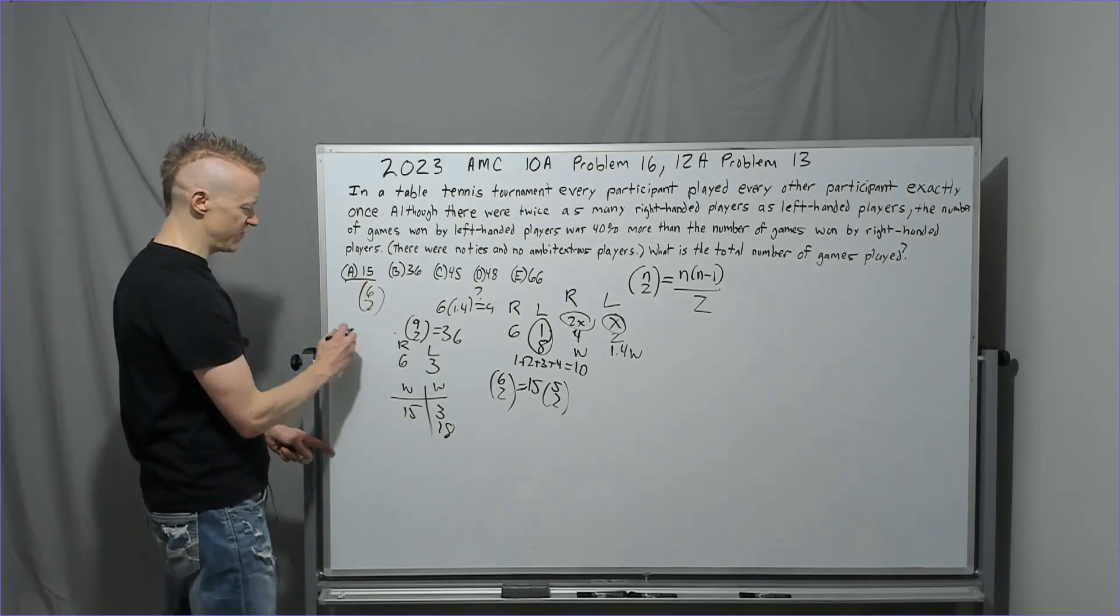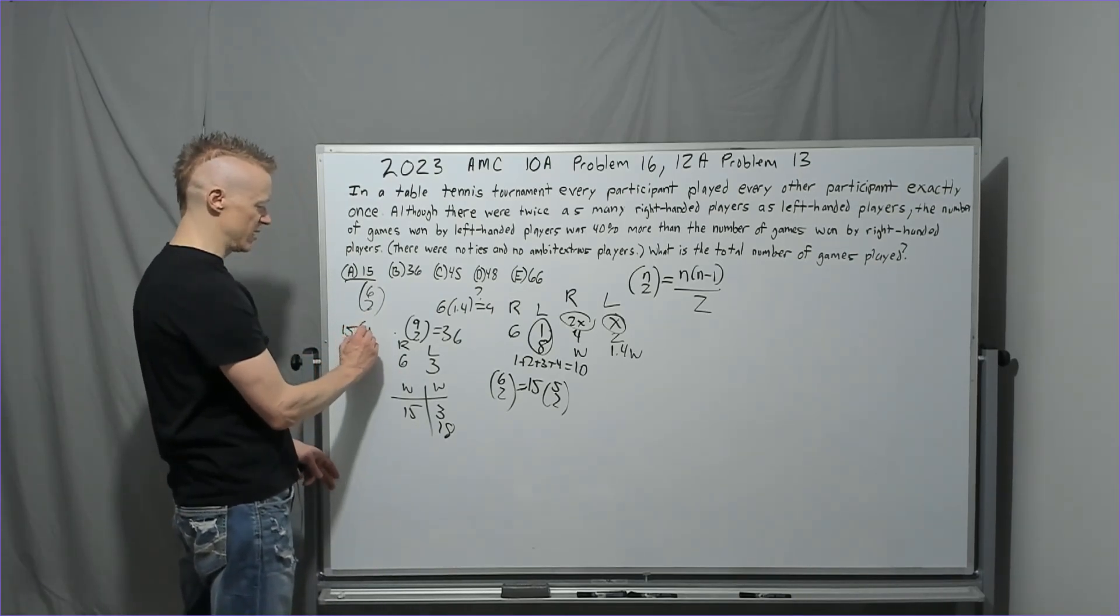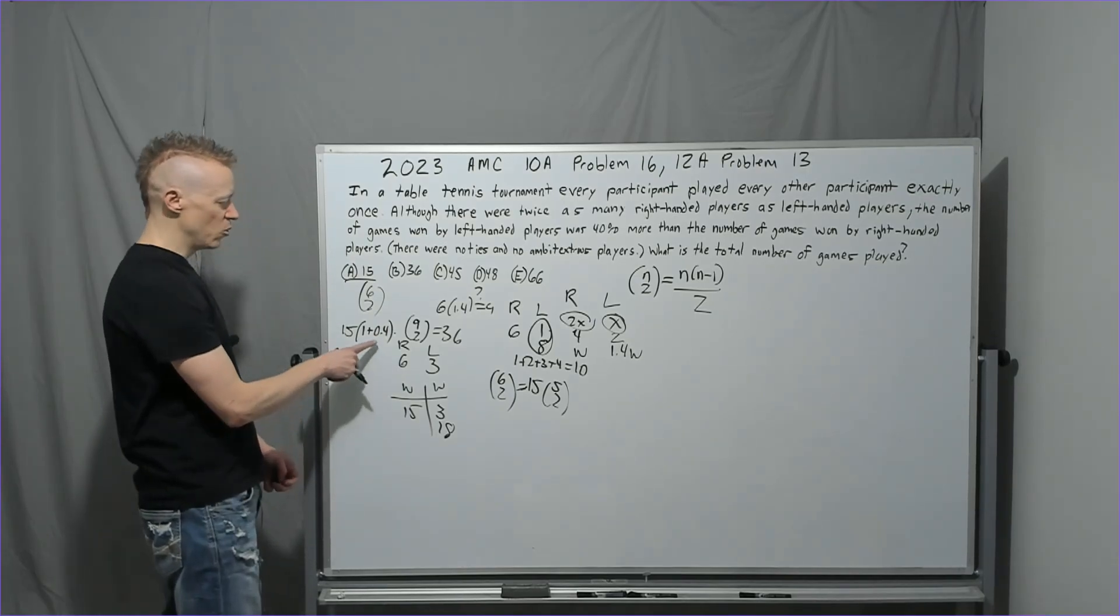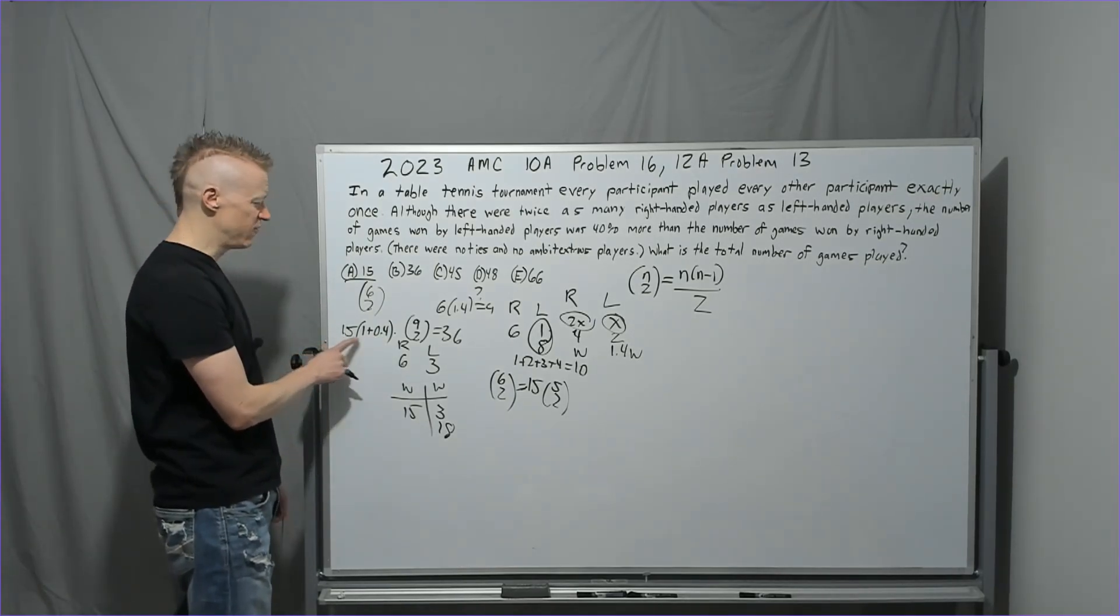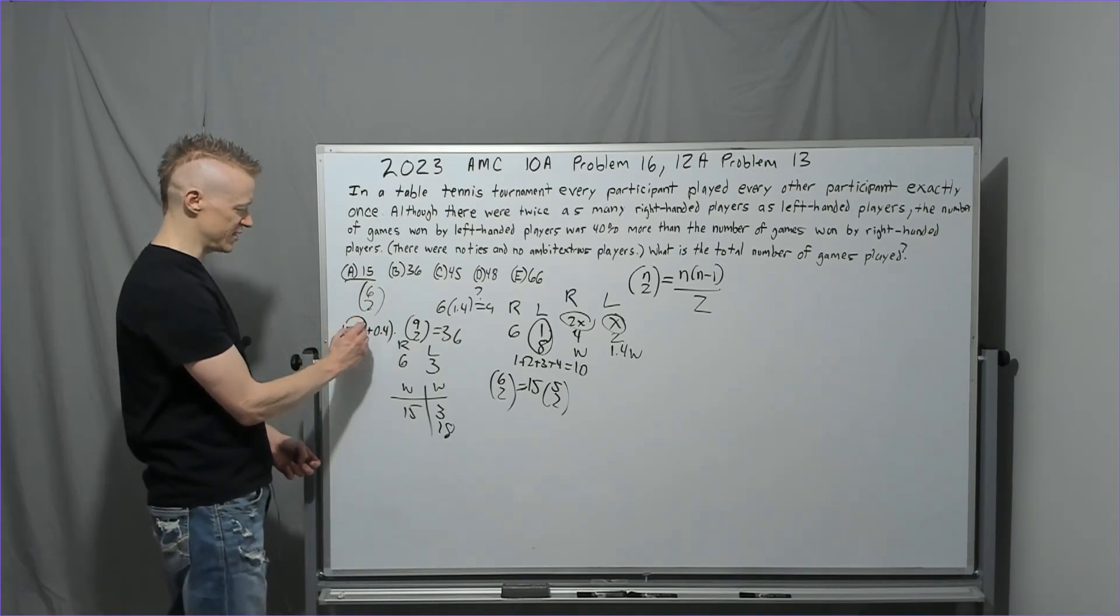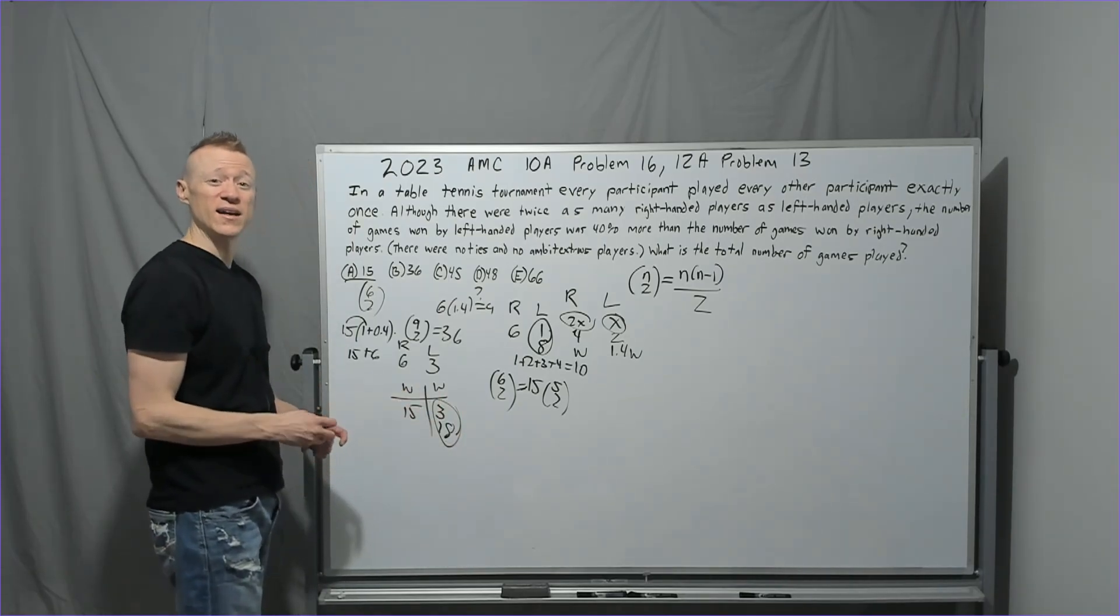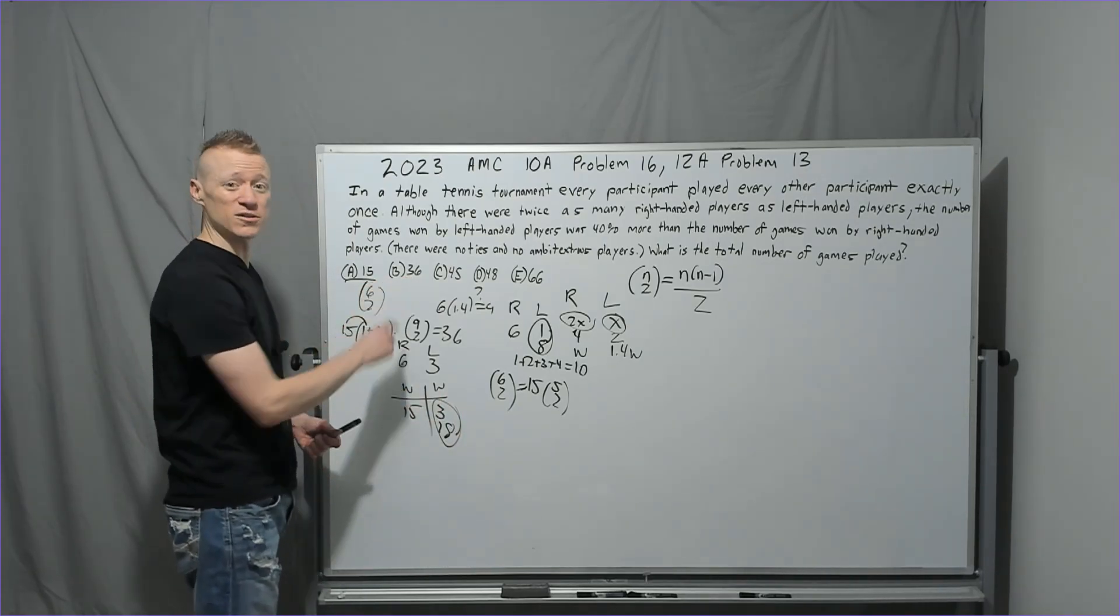And so you say, okay, so now if I take 15, what is 40% of 15? What if I did 1 plus 0.4? Well, 10% of 15 is 1.5, and 40% is just 4 times that. So it's 6. And if you take 15 times 1 and you add 6, you definitely get the 21 here. So it's definitely possible this could be the answer.